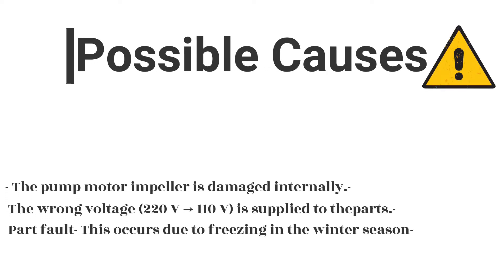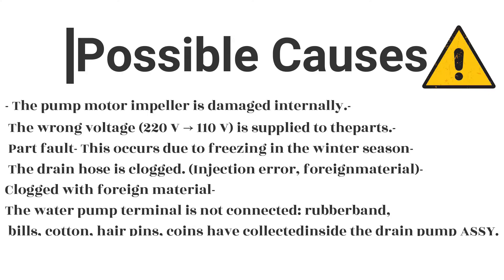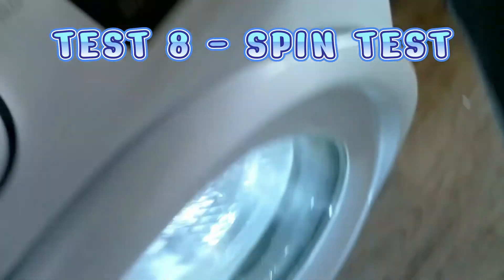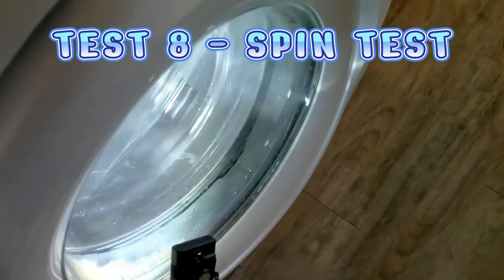Here's the list again of common errors for drain pump problems. Error ND: the pump motor impeller is damaged internally, wrong voltage (220V instead of 110V), part fault, freezing in the winter season, drain hose clogged, foreign material blockage, water pump terminal not connected, or rubber bands, bills, cotton, hair pins, and coins collected inside the drain pump assembly.